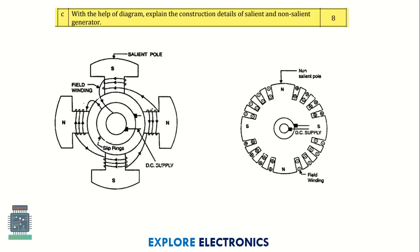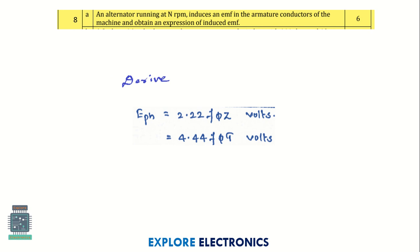With the help of a diagram, explain the construction details of salient and non-salient pole generators — this question was asked in model paper 1 also, so it is important for the examination. Then for an alternator running at N rpm, obtain the expression for induced EMF in the armature conductors — this is again an expected question.